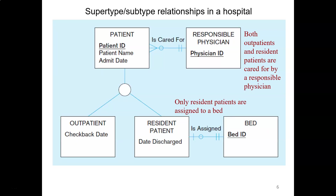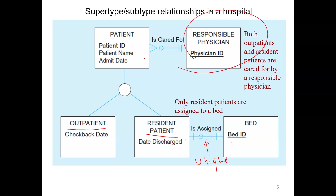In the patient example, the supertype is patient with two subtypes: outpatient and resident patient. All patients are cared for by a responsible physician — a common relationship — so that relationship is drawn between the responsible physician and the supertype patient. Resident patients are assigned a bed because they stay in the hospital; this is a unique relationship, so the relationship between bed and patient is drawn between bed and resident patient only, not outpatient.